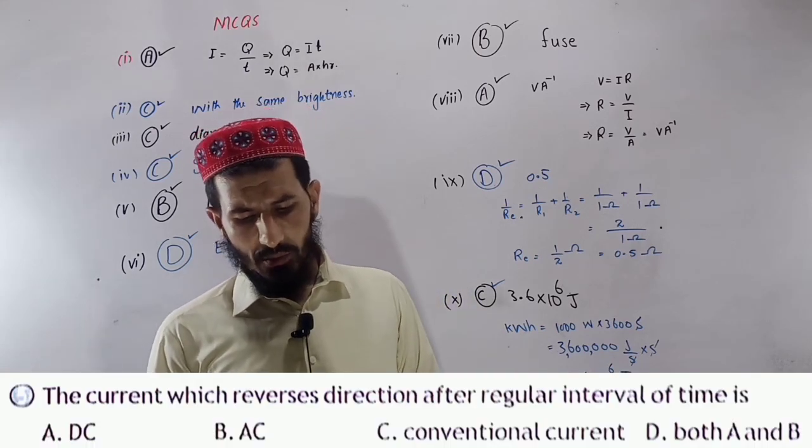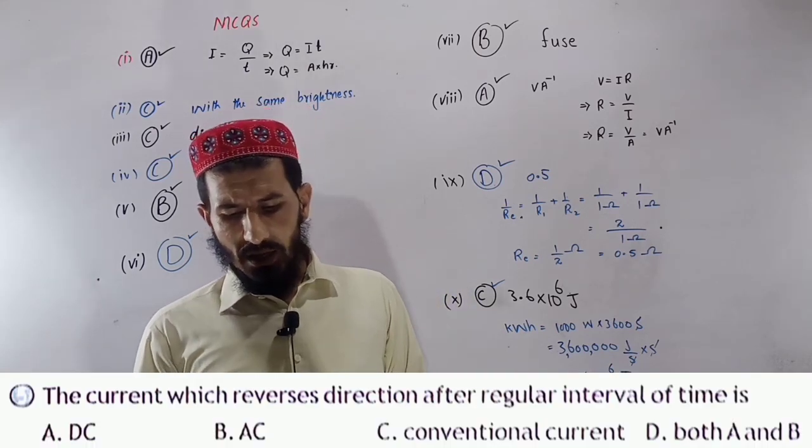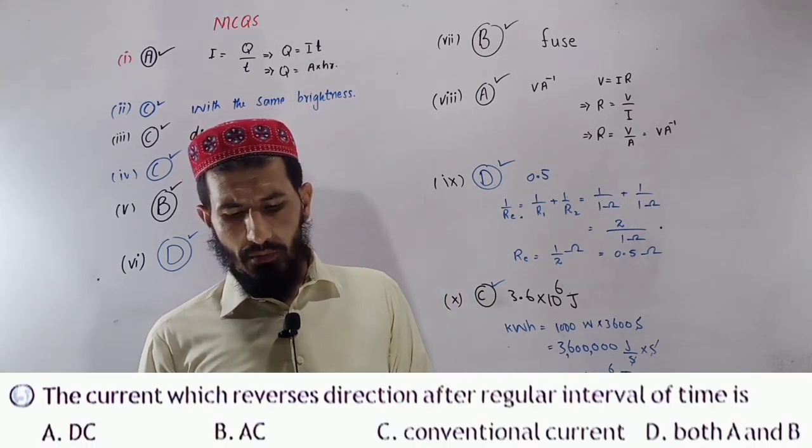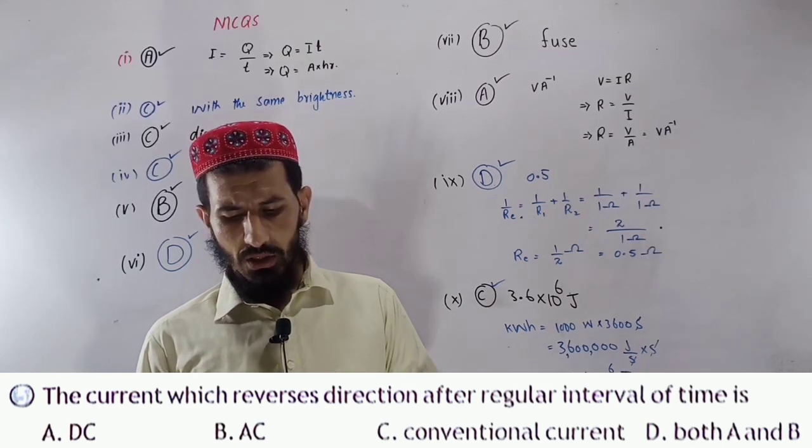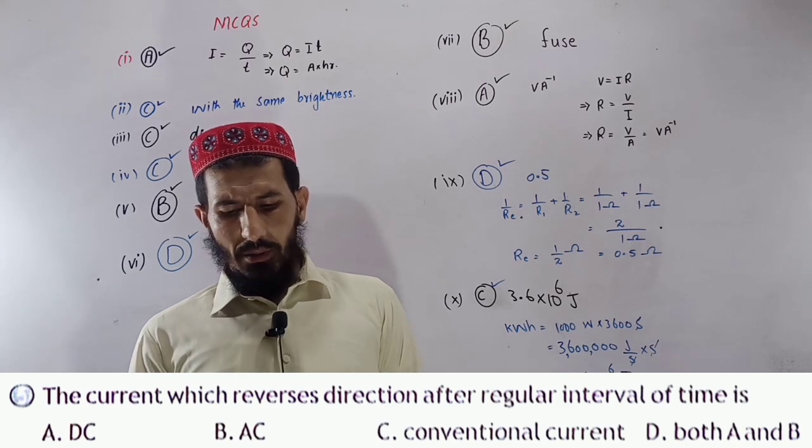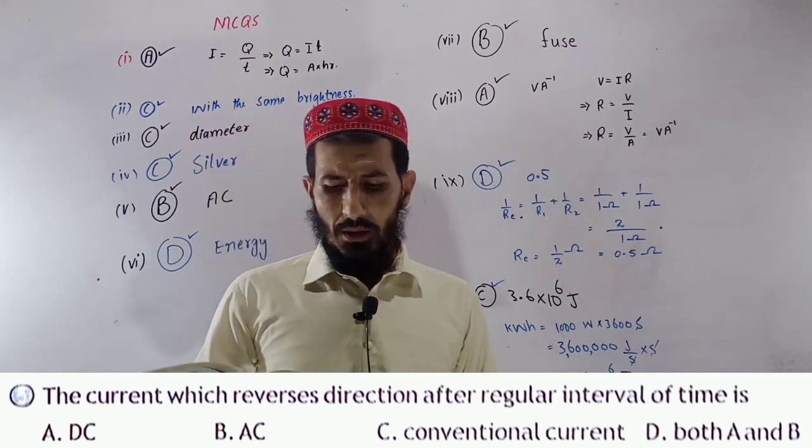The current which reverses direction after regular intervals of time is AC current. The answer is option B.